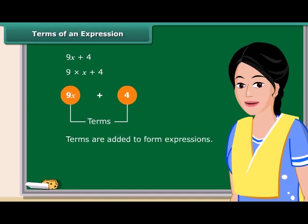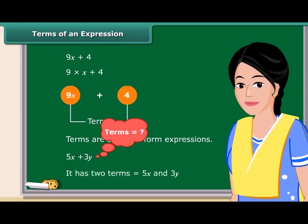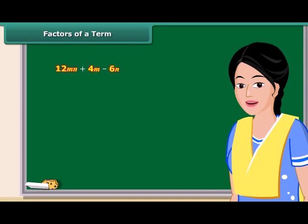How many terms are there in 5X plus 3Y? That's right. It has two terms. A term is a product of its factors.